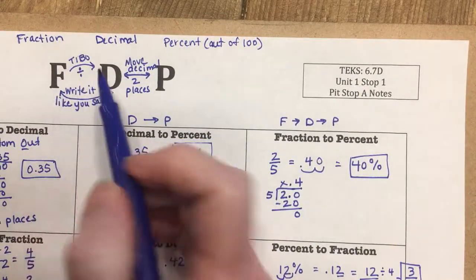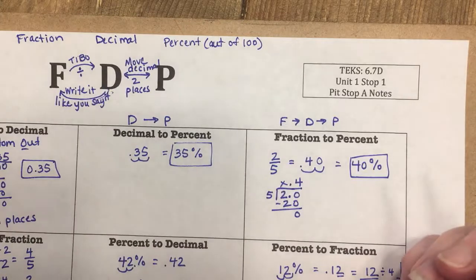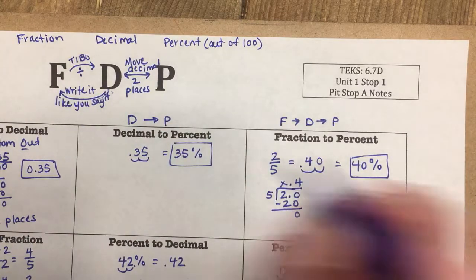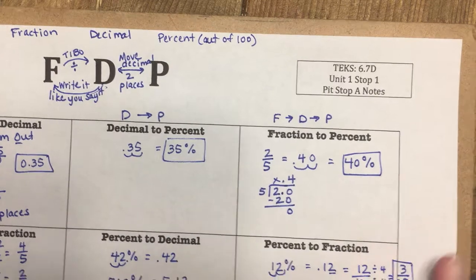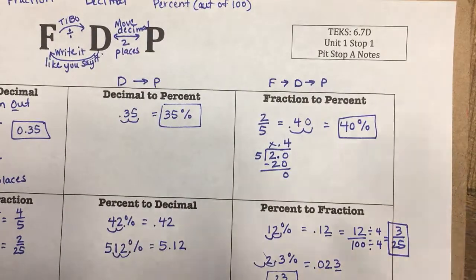So that's FDP — a tool we use to change fractions to decimals, decimals to percents, and go the other way: percents to decimals and decimals to fractions. See you soon.